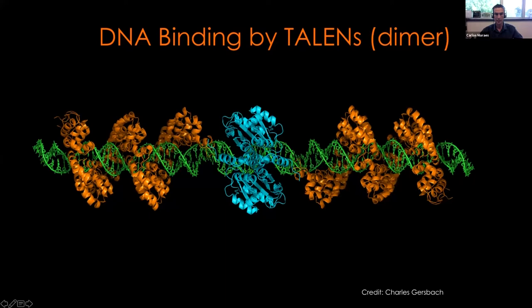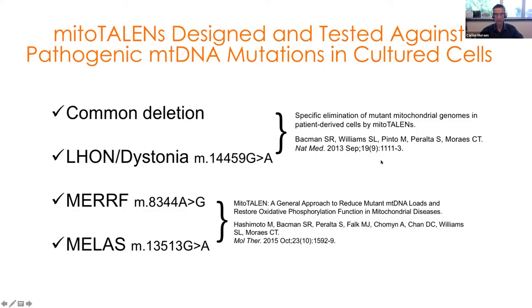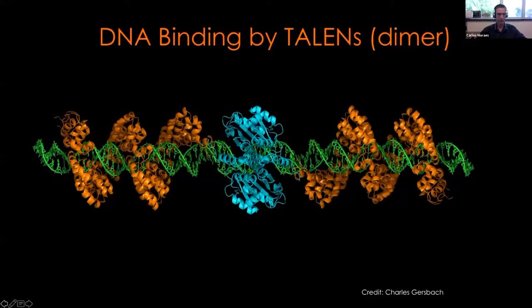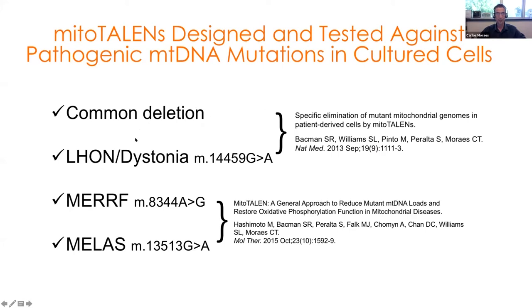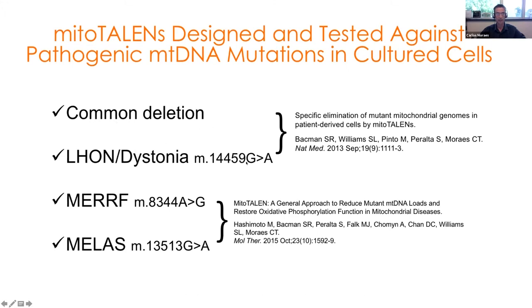The TALENs bind to DNA as dimers and cleave the mitochondrial DNA because they have a DNA binding domain and a nuclease domain. These proteins are relatively large and work as dimers, but they're still quite specific because they recognize a lot of DNA sequence. Using this approach in culture we have targeted different mitochondrial mutations — like the common deletion, a mutation associated with Leber's dystonia, a tRNA mutation associated with MERRF, and another protein-coding mutation associated with MELAS.